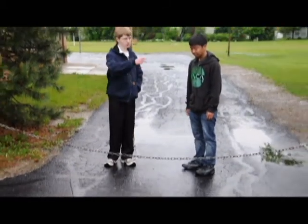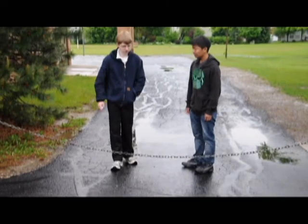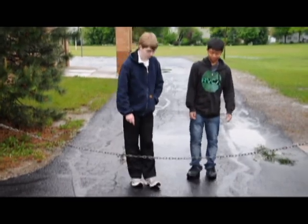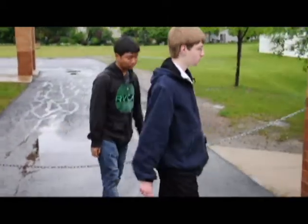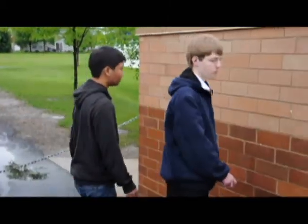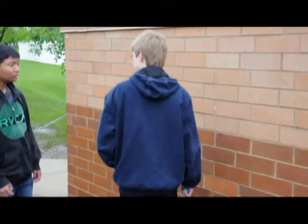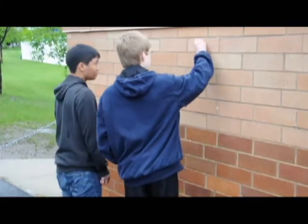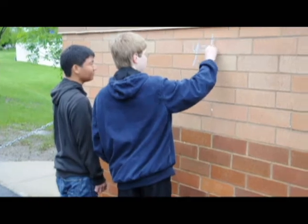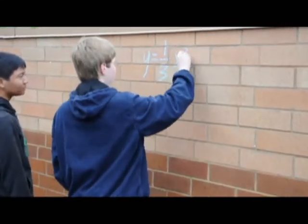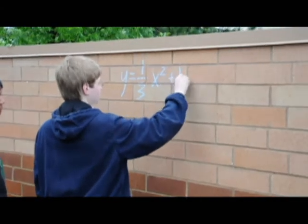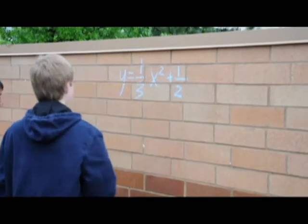Okay, we have a wall. Let's calculate this. Alright. Okay, what did we say our equation was? One-third x squared plus one-half.